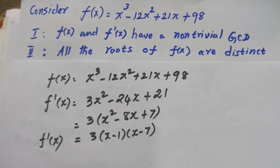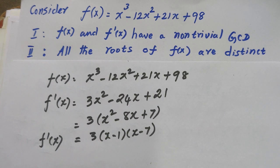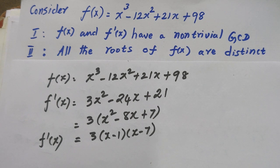Now to factorize f of x, we look for common roots. If f and f dash share a common root, that will give us the GCD. Since f of x is a cubic equation, it has exactly 3 roots in total.